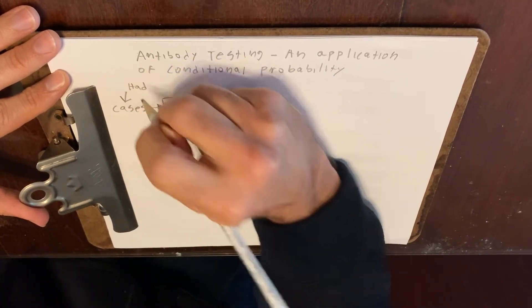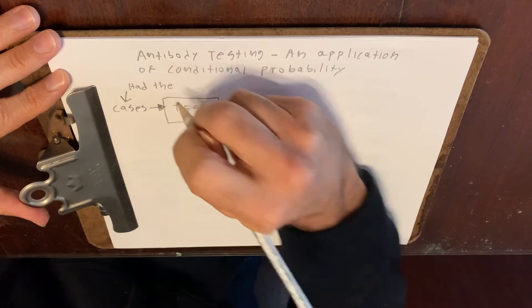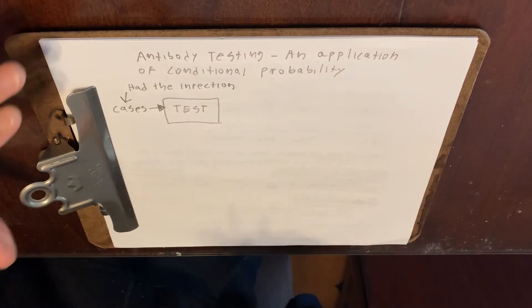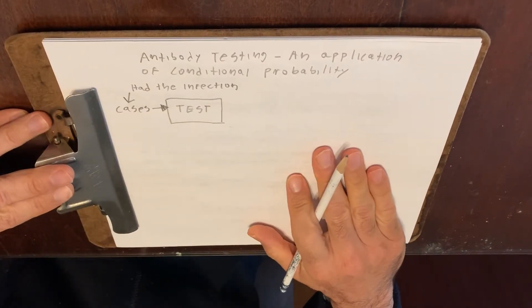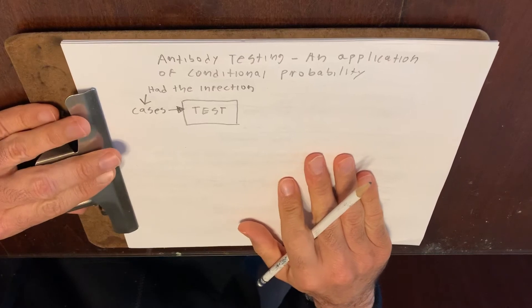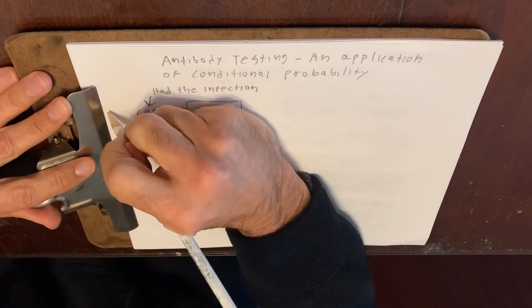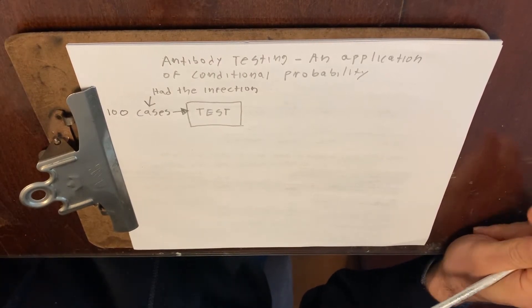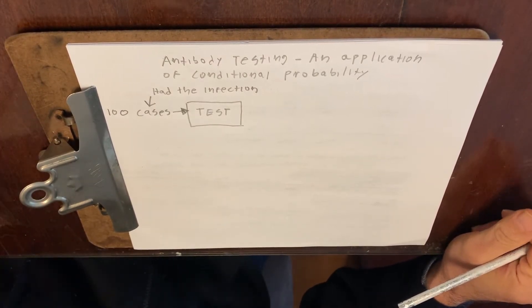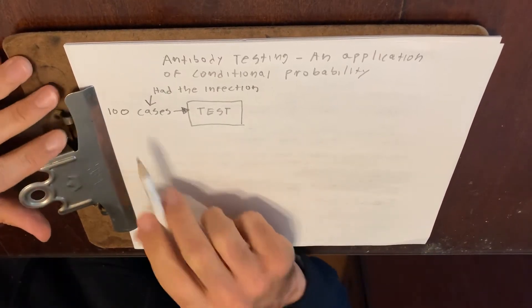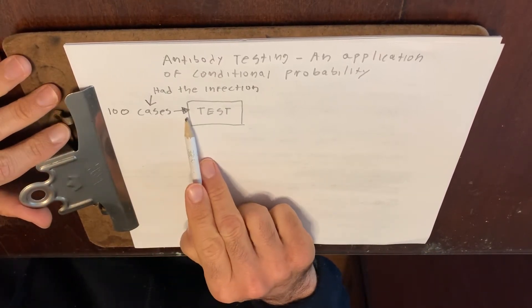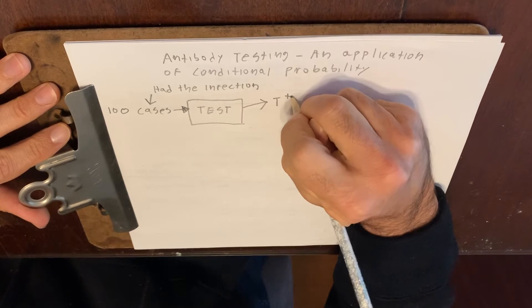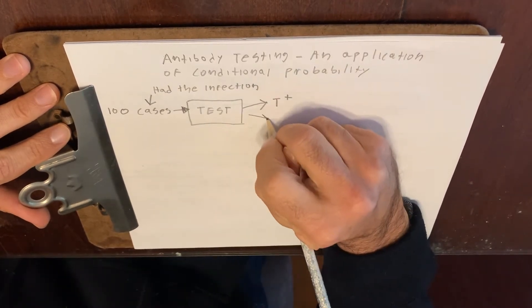So we take a certain number of cases. Let's just say, hypothetically, to make the math really easy, let's say we take a hundred cases. We might not have a hundred cases, but let's just say we have a hundred cases, just to make it easy. We give a hundred cases the test. A certain number will test positive and a certain number will test negative.